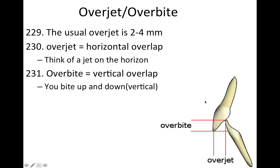Overjet and overbite. The usual overjet is about two to four millimeters. Overjet is the horizontal overlap — you can see a red line here showing the amount of overjet. Overbite is the vertical overlap. The way I think of this: for overjet it's horizontal, so I imagine a jet flying across the horizon. For overbite, I think of when you bite down — it's a vertical motion going up and down.